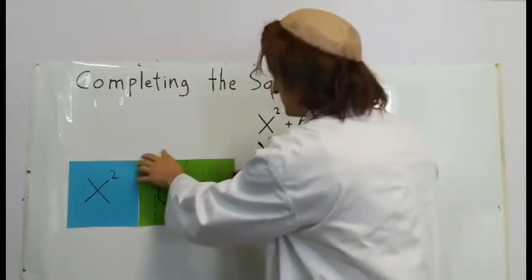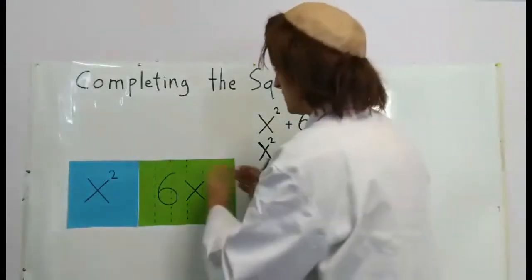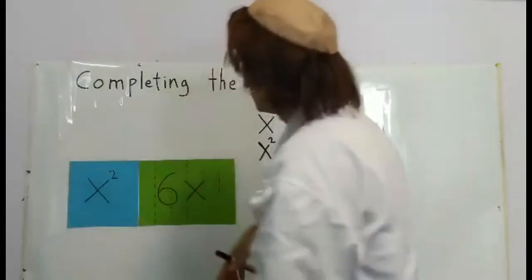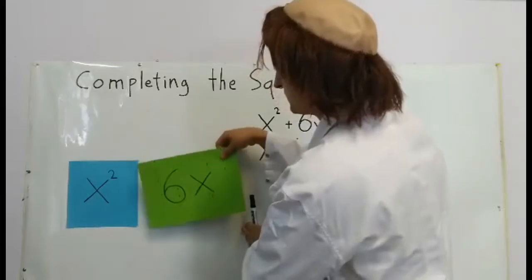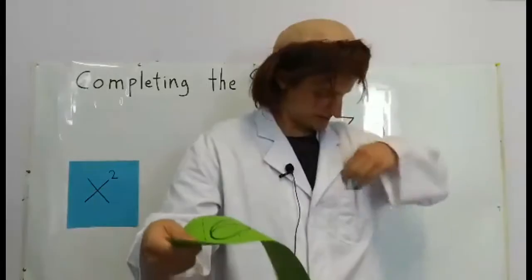Our next step is to try to make it into a square. If we cut this here and paste it here, it will almost be a square. Let's karate chop it like this.